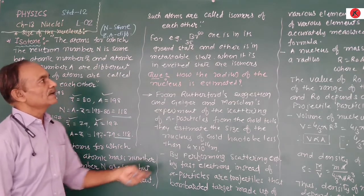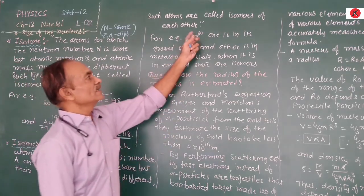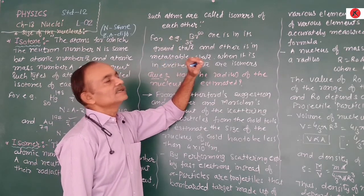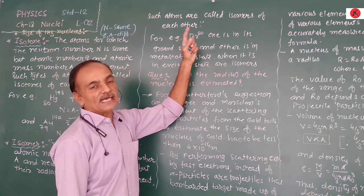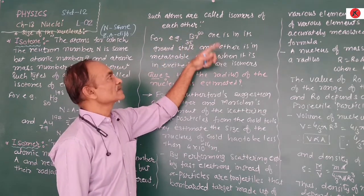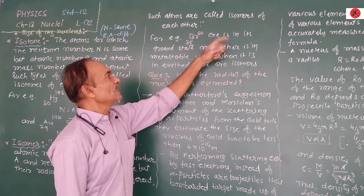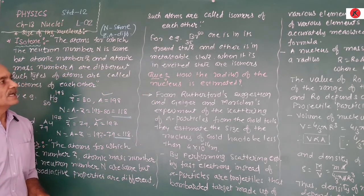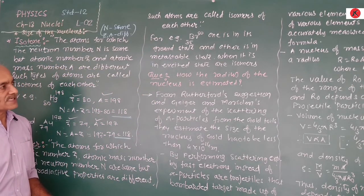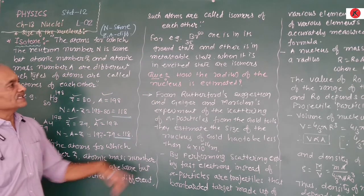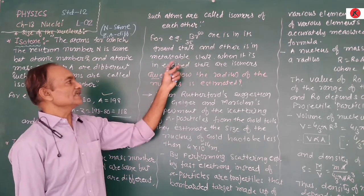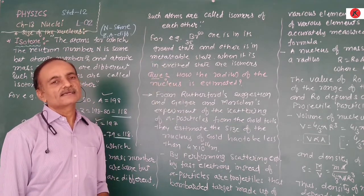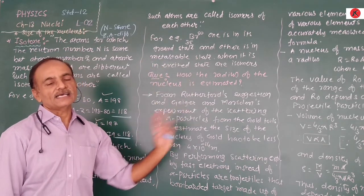As an example, Bromine-80 (Z=35) has two isomers. One is in its ground state and the other is in its metastable state — that means when it is in an excited state. These two states are isomers of each other.